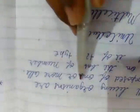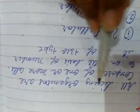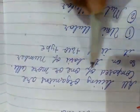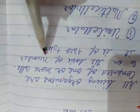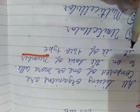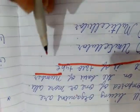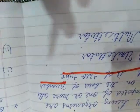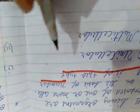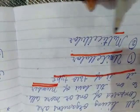All living organisms are composed of one or more cells. On the basis of number, cells are of two types: unicellular and multicellular.